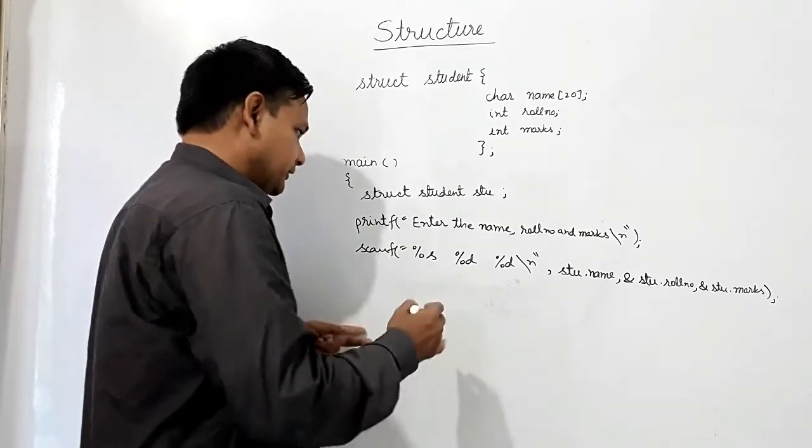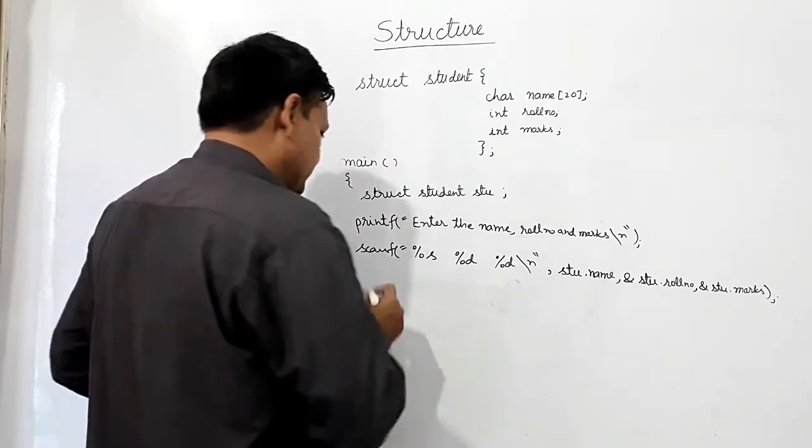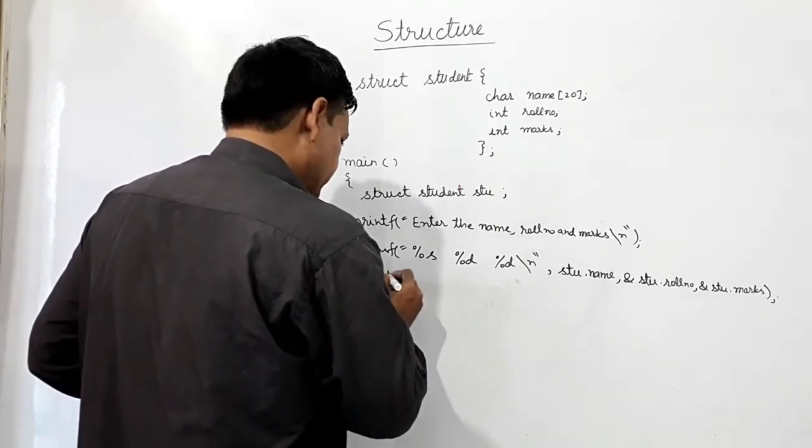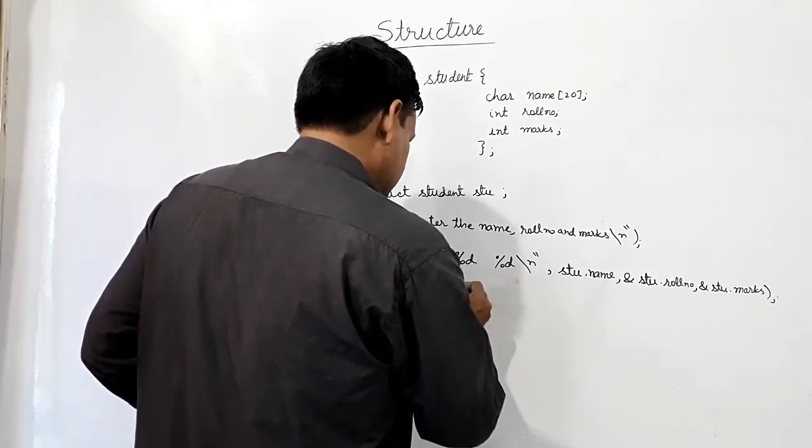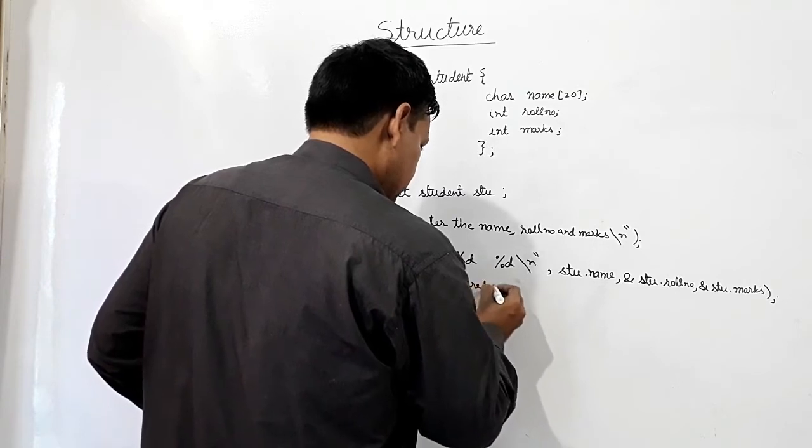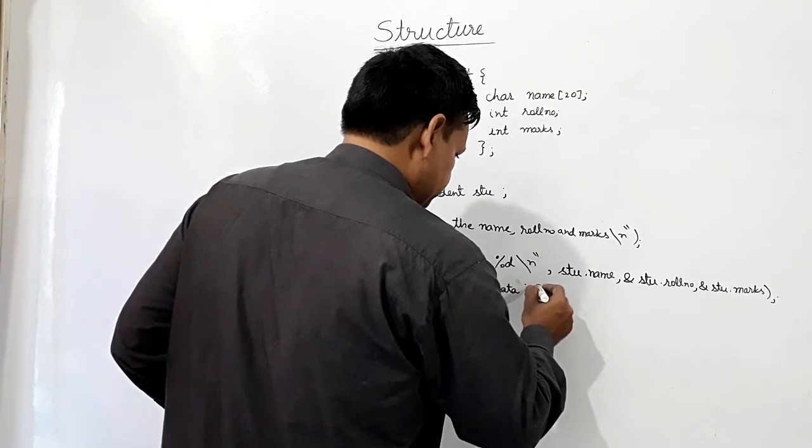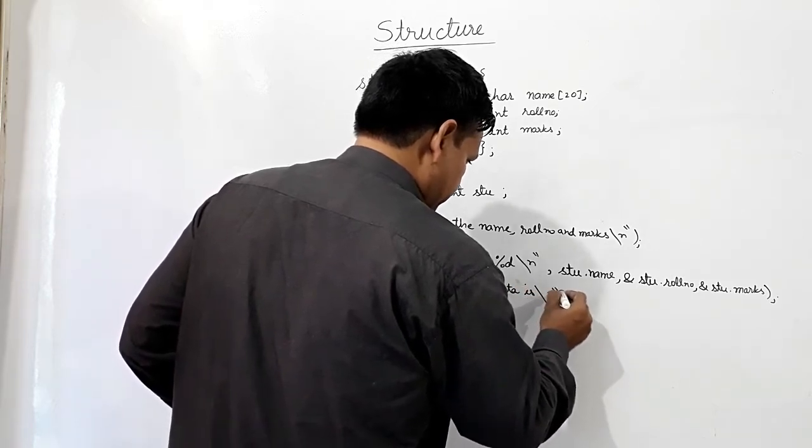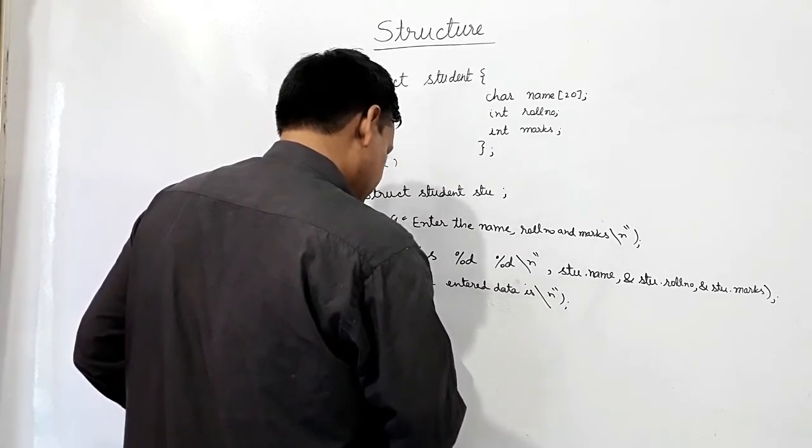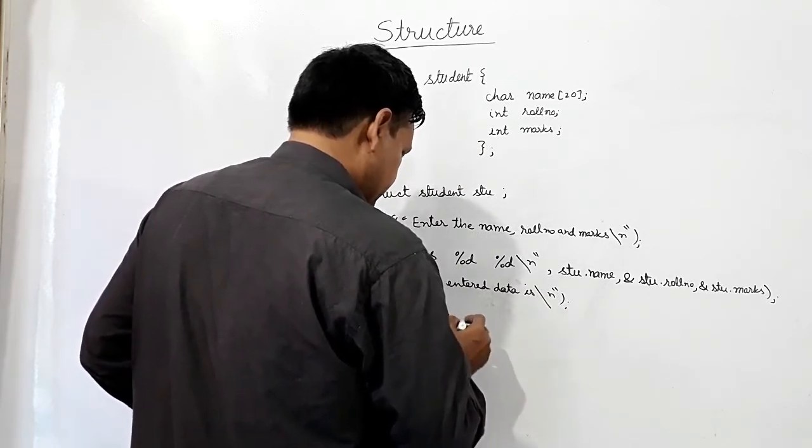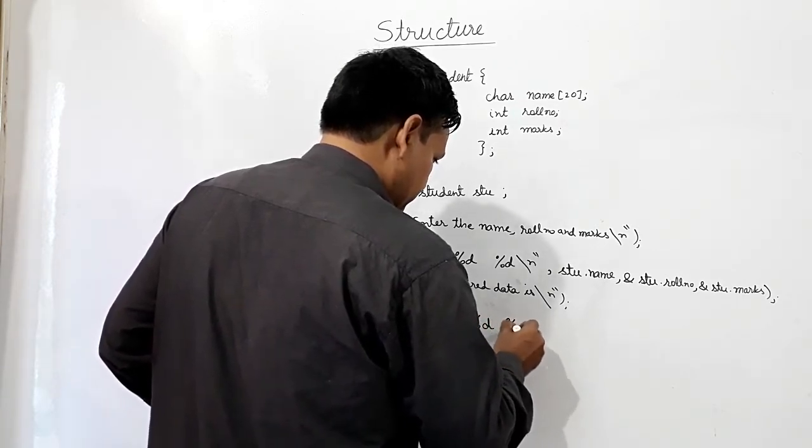And after that, if I want to print this entered data, then printf - the entered data is - printf %s %d %d.